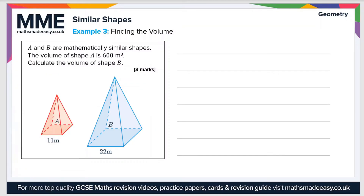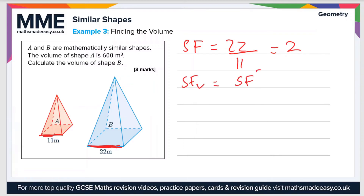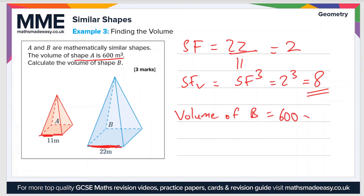Let's look at a second example. A and B are mathematically similar shapes. The volume of shape A is 600 metres cubed — calculate the volume of shape B. Because they're mathematically similar, the length along the bottom of A maps onto the length along the bottom of B. So the scale factor is 22 divided by 11, which is 2. The volume scale factor is the linear scale factor cubed: 2 cubed equals 8. The volume of B equals 600 times 8, which equals 4,800 metres cubed.